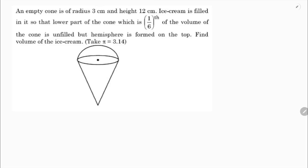An empty cone has a radius of 3 centimeters and a height of 12 centimeters. Ice cream is filled in it so that the lower part of the cone — which is one-sixth of the volume of the cone — is unfilled, but a hemisphere is formed on the top. Find the volume of the ice cream.